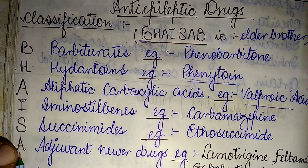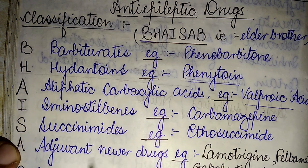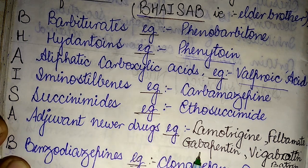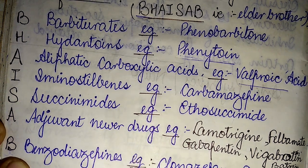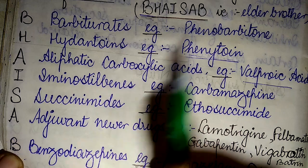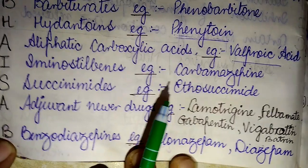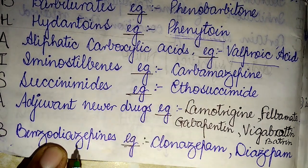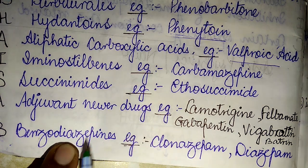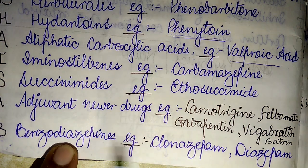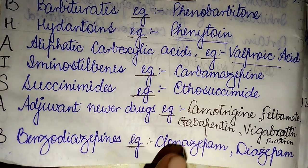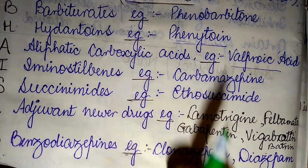A stands for the adjuvant newer drugs — examples include lamotrigine, felbamate, gabapentin, and vigabatrin. The last B of BHAISA refers to another very important class used in epilepsy treatment: the benzodiazepines. The most common examples are clonazepam and diazepam.